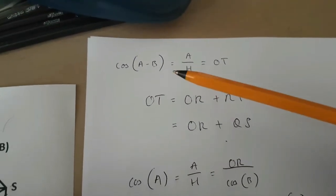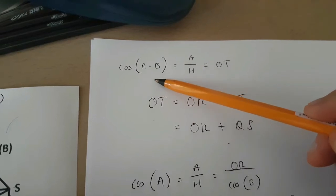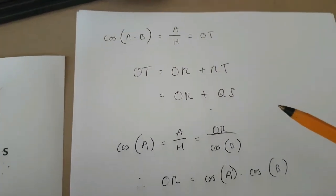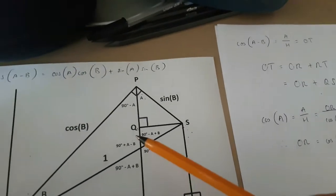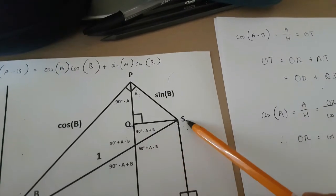So to complete our cos(A-B) proof, we need to figure out what QS is. So let's focus on QS.